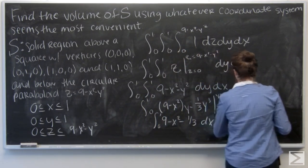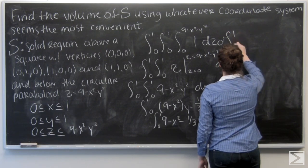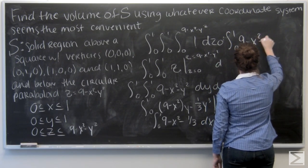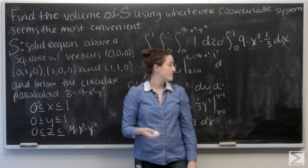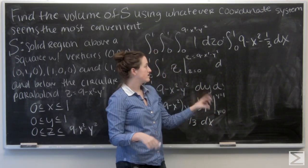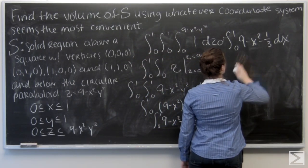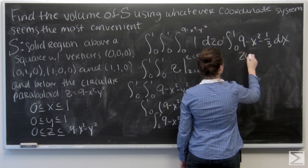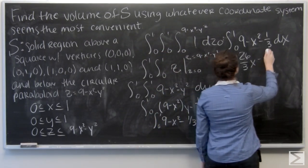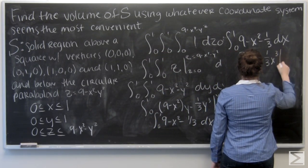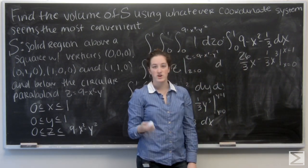I'm going to move up here. I'm looking at the integral from 0 to 1 of 9 - x² - 1/3. 9 - 1/3 is just a constant, so that becomes (26/3)x - (1/3)x³. I want to evaluate that from x = 0 to x = 1.